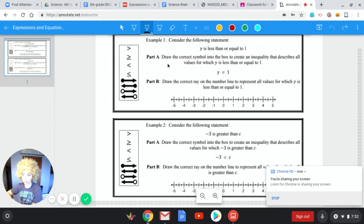So part A asks us to draw the correct symbol into the box to create an inequality that describes all values for which y is less than or equal to one. So we just have to figure out which sign fits in there.